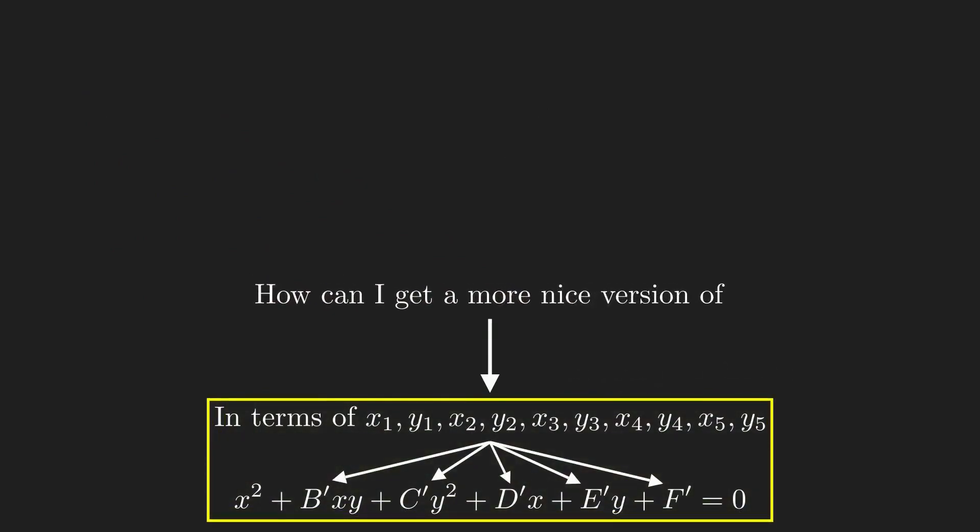Then how can I derive a conic section equation in terms of five solution points and have the equation look nice? And what does nice even look like?